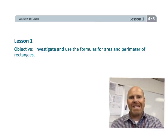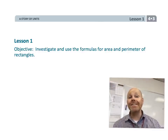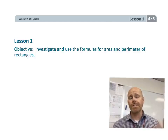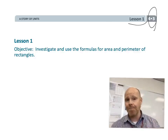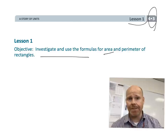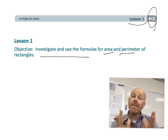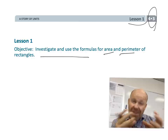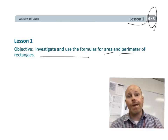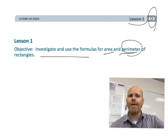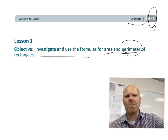All right, this is fourth grade, module 3, lesson 1. In this lesson we're going to be investigating and using the formulas for area and perimeter of rectangles. And especially the thing we're going to focus on is all of the different flavors of formulas that exist for perimeter and how we can derive them. Let's get started.